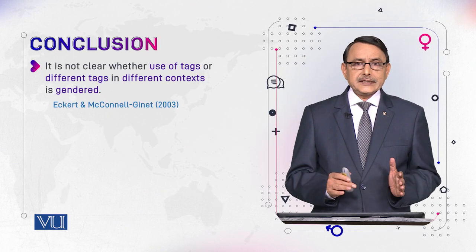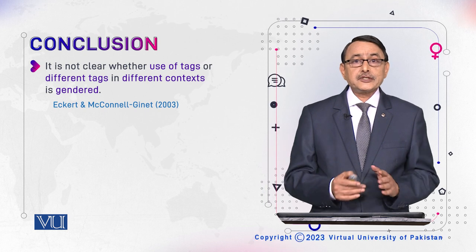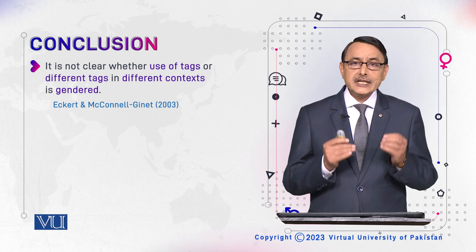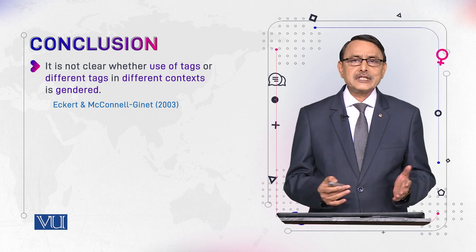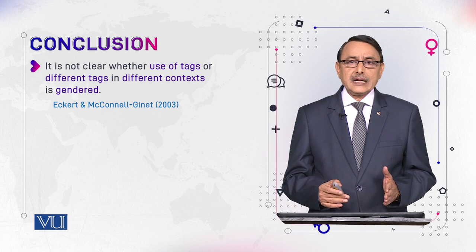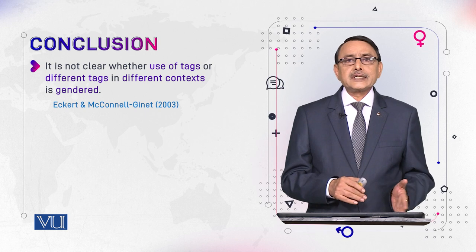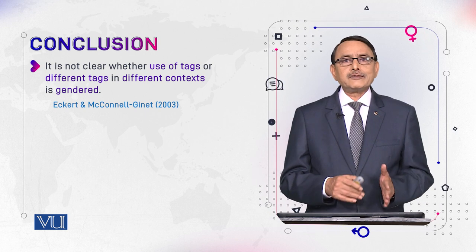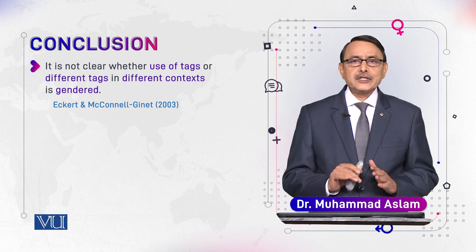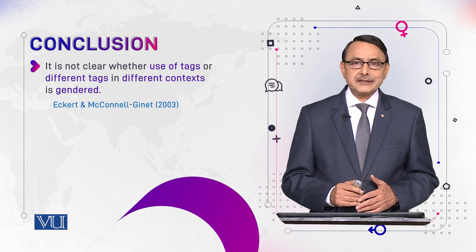In light of these three different functions of the same expression, we cannot say there is a direct link between a tag question and a person's position as powerful or powerless. There is no certainty in the presence of multifunctionality.